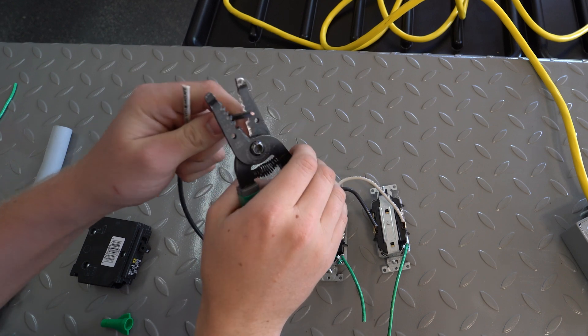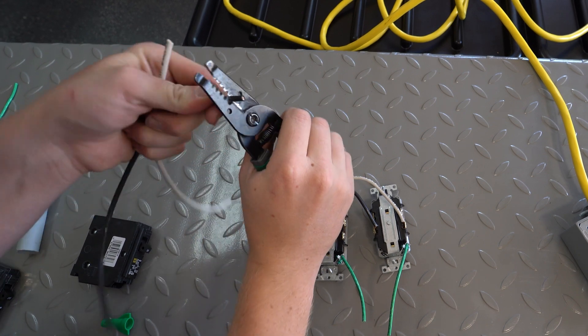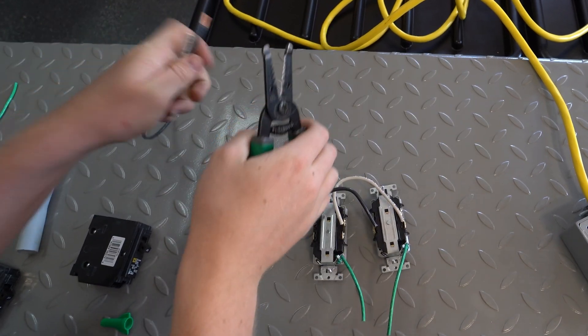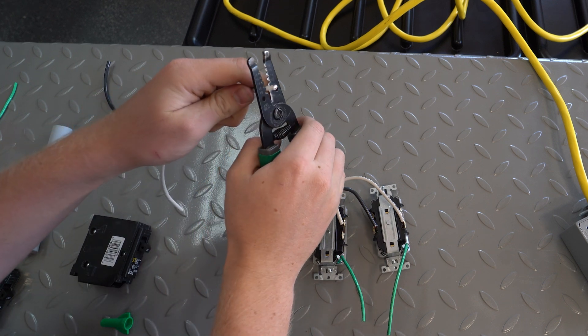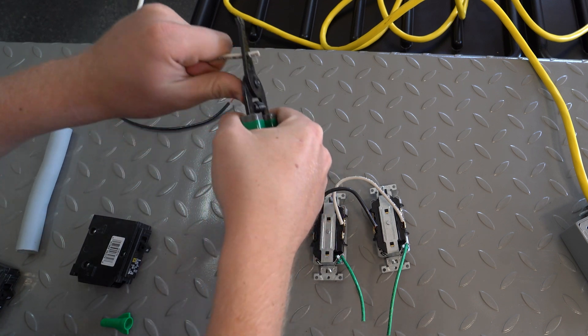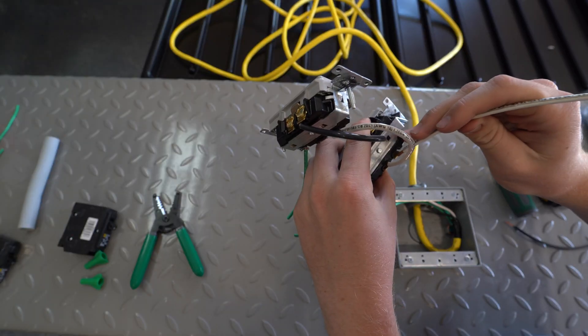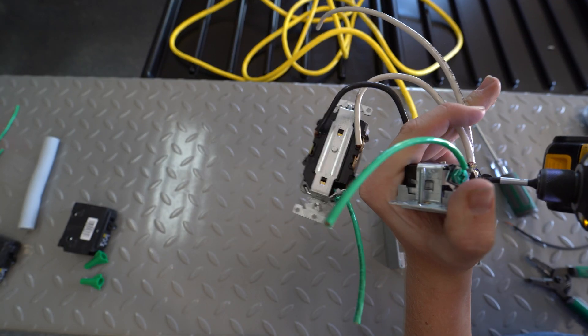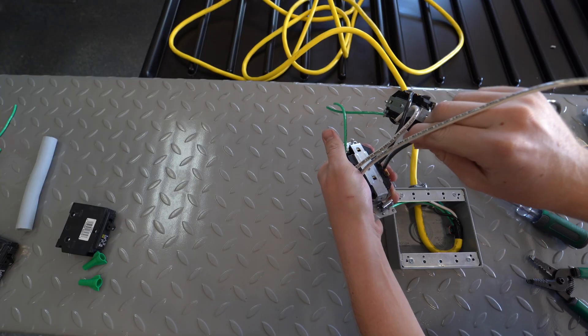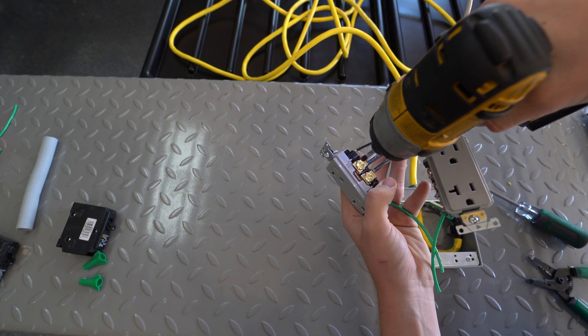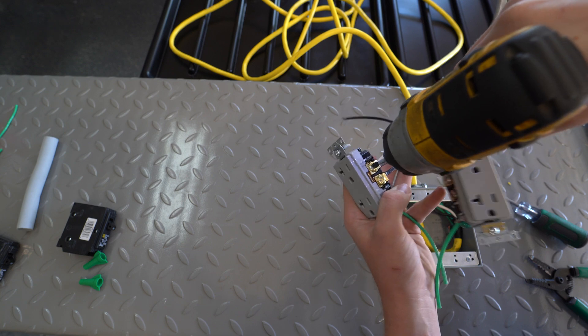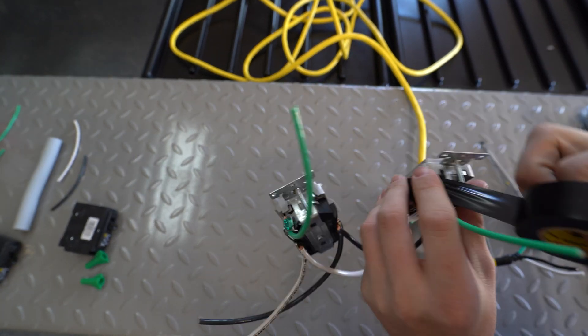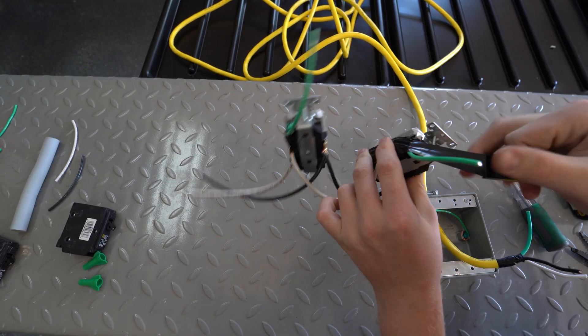Now strip another length of black and white wire. On one of the outlets, add the white wire into the neutral side. On that same outlet, add the black wire into the hot side. As a precautionary, go ahead and wrap the entire outlet connections with electrical tape.